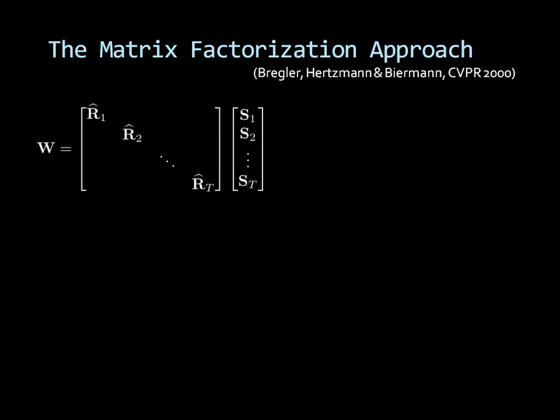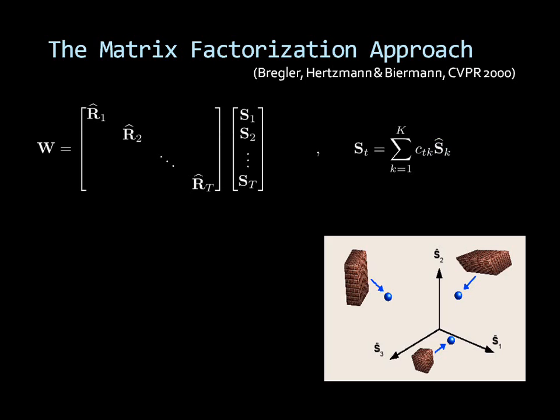The standard approach represents each 3D shape as a linear combination of a small number K of basis shapes. The basis shapes are the axes of a linear space where each object shape is represented as a point with coordinates given by the coefficient C. Using this representation, we obtain the standard factorization model.